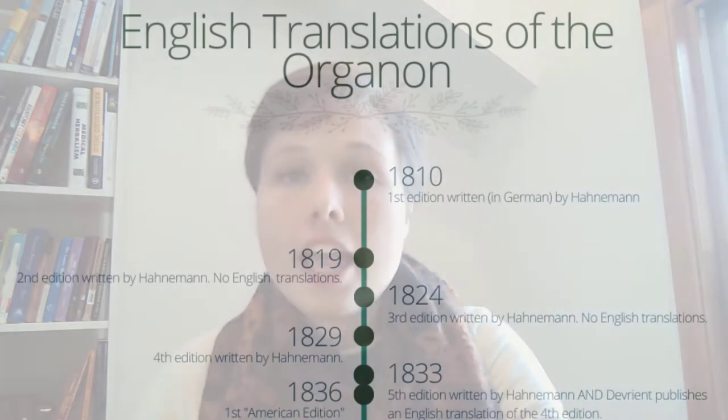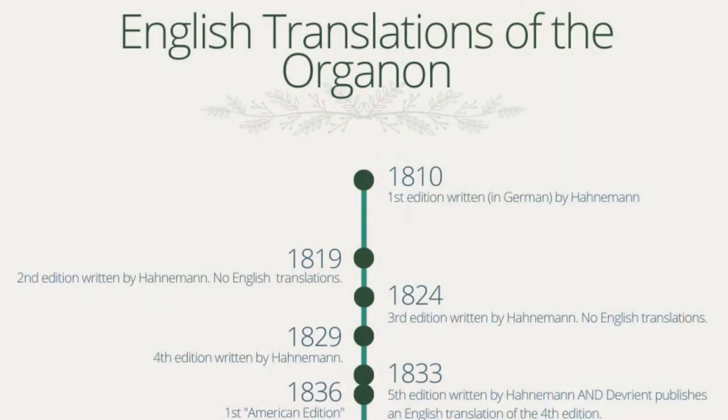Before we get into the different translations, I'm going to go over the Organon itself quickly. The Organon was written by Hahnemann, the first edition in 1810, and it was written to set down principles of the practice of medicine in general but also homeopathy in particular. It's also how to put those principles into practice, so it's a how-to manual of the philosophy behind why we practice.